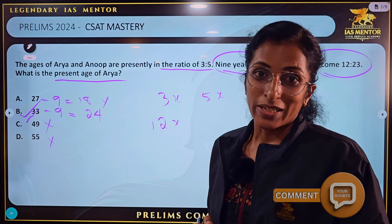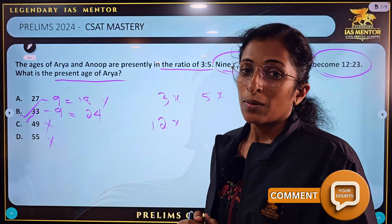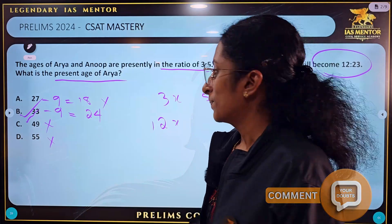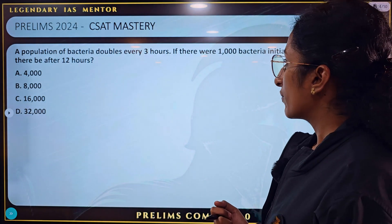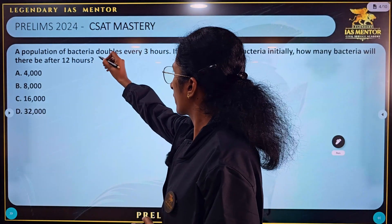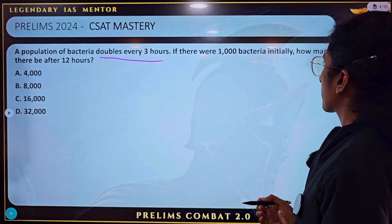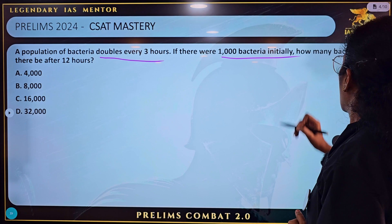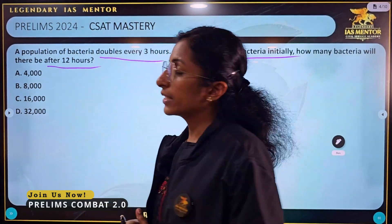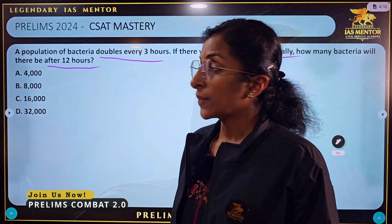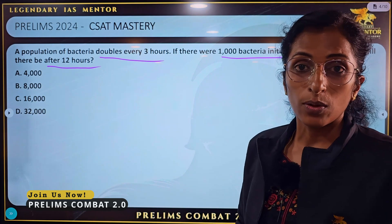Question 2. The population of bacteria doubles every 3 hours. If there were 1000 bacteria initially, how many bacteria will there be after 12 hours? Every 3 hours the bacteria will double.